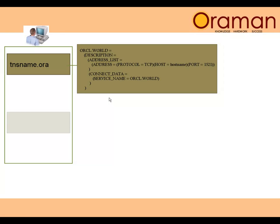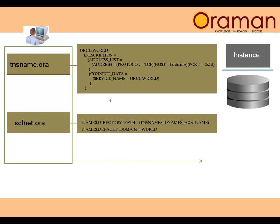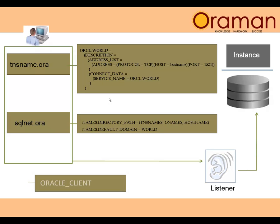On the client side, you need to have sqlnet.ora and/or tnsnames.ora. The sqlnet.ora file only sets direction — it specifies preferences such as whether to use TNS names. TNS names is not the only way; you can use an Oracle name server or even host names to directly connect. If it's within the same company, you can have a default domain which will be appended for all TNS names.ora connections.